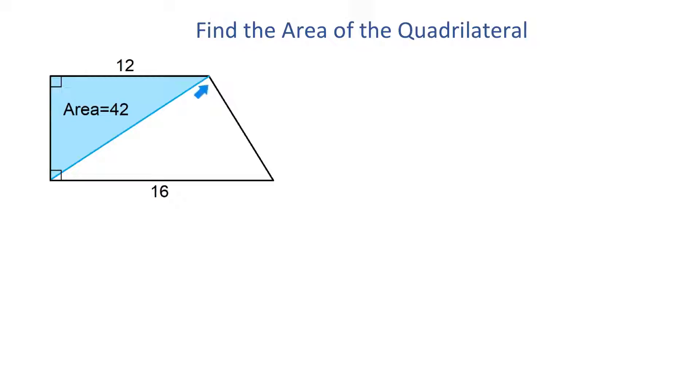So instead, from this point, we will draw a perpendicular down to the bottom side and we will form two right triangles. And now, because here we have formed a rectangle and this is the diagonal, then if the area of this triangle is 42 square units, then the area of this triangle is also 42 square units.